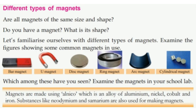There are different types of magnets, and not all magnets are of the same size and shape. Common types include: bar magnet, U magnet, disc magnet, ring magnet, arc magnet, and cylindrical magnet. Which among these have you seen? Examine the magnets in your school lab.